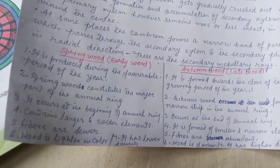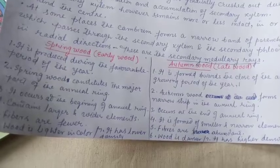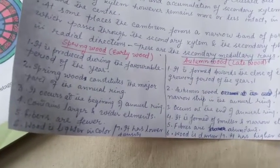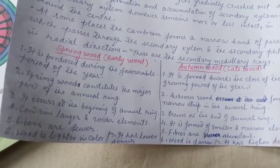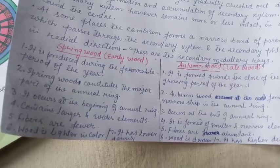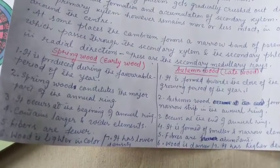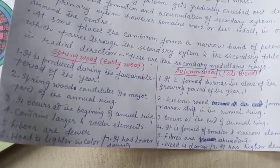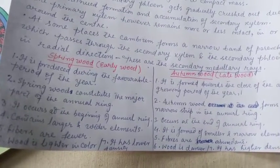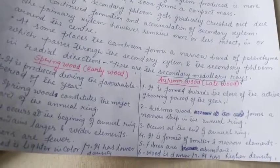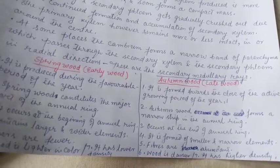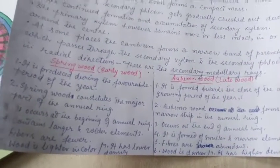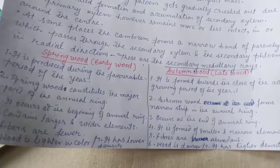Fibers are abundant in autumn wood. Spring wood is lighter in color, while autumn wood is darker. Spring wood has lower density, while autumn wood has higher density because of the small size of the elements of which it is formed. These are the typical differences often asked in exams. Thanks, have a nice day.